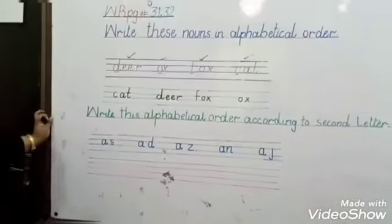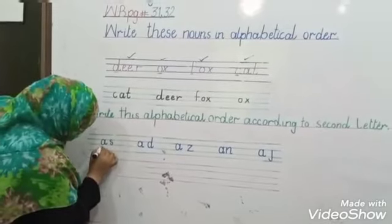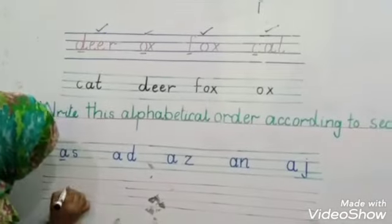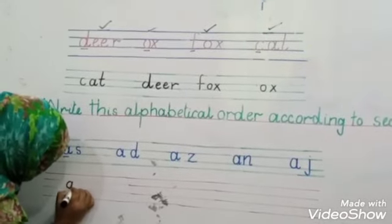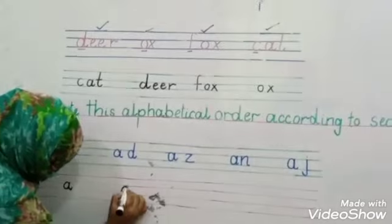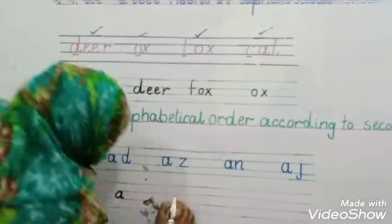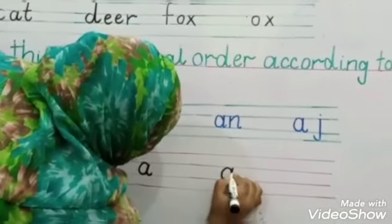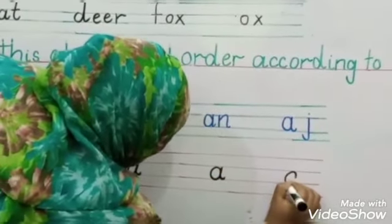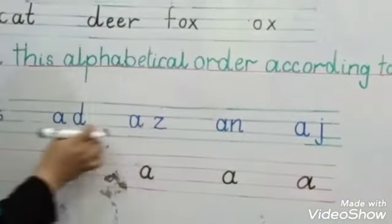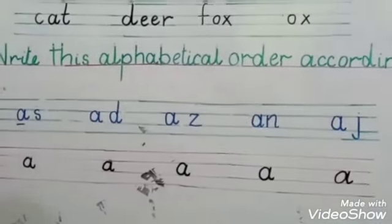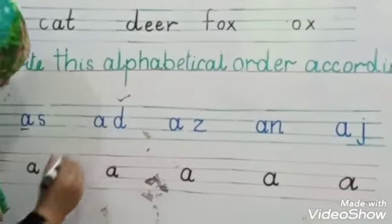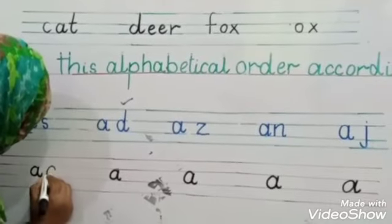Means students, that you will skip the first letter and then you will check the second letter. So students check the second letter, D. So write here D.